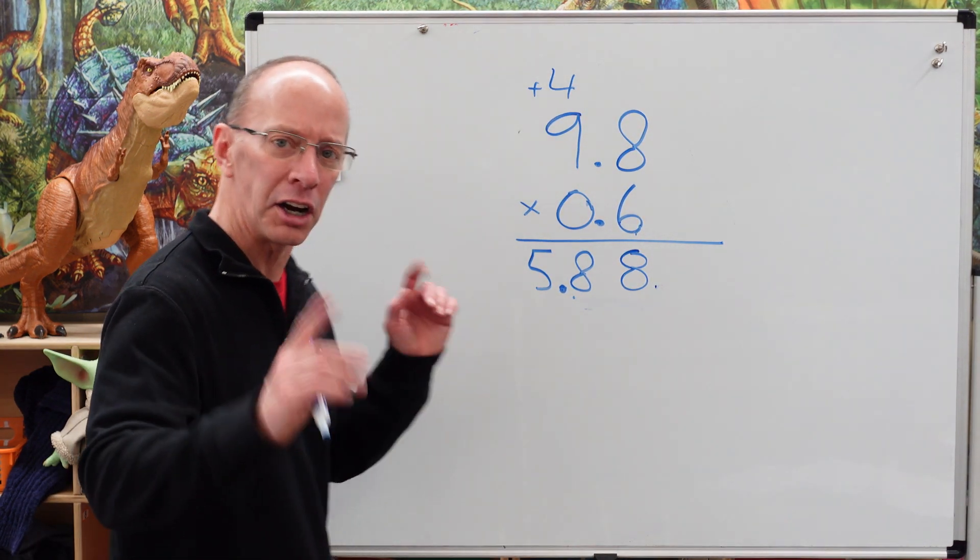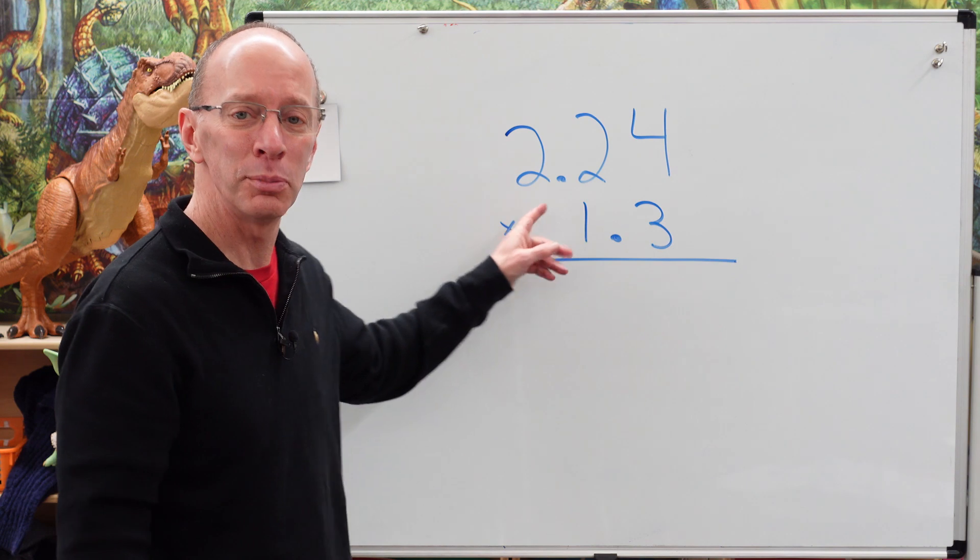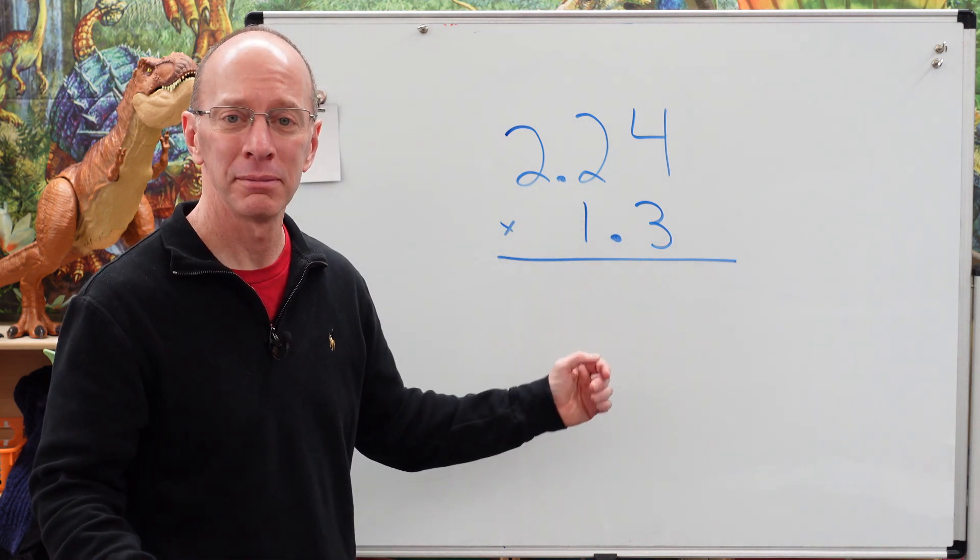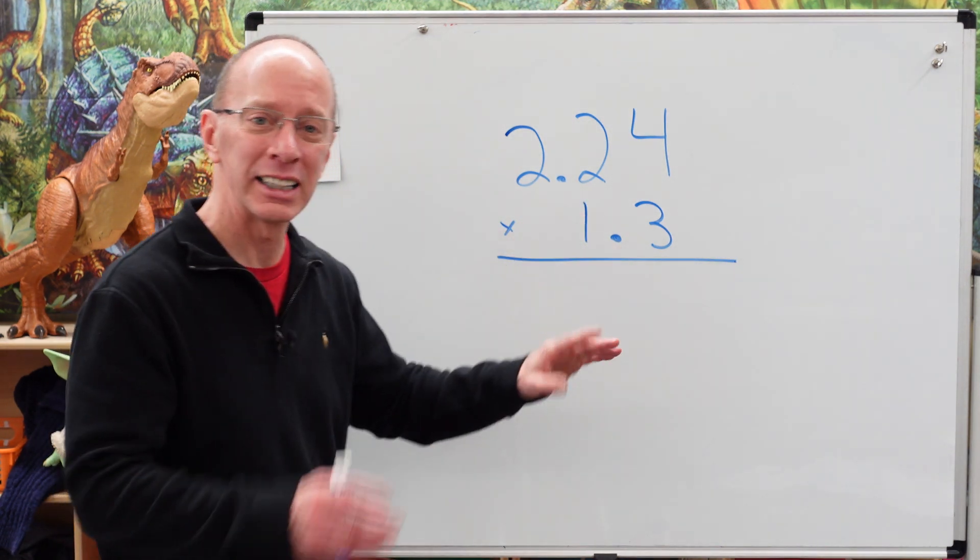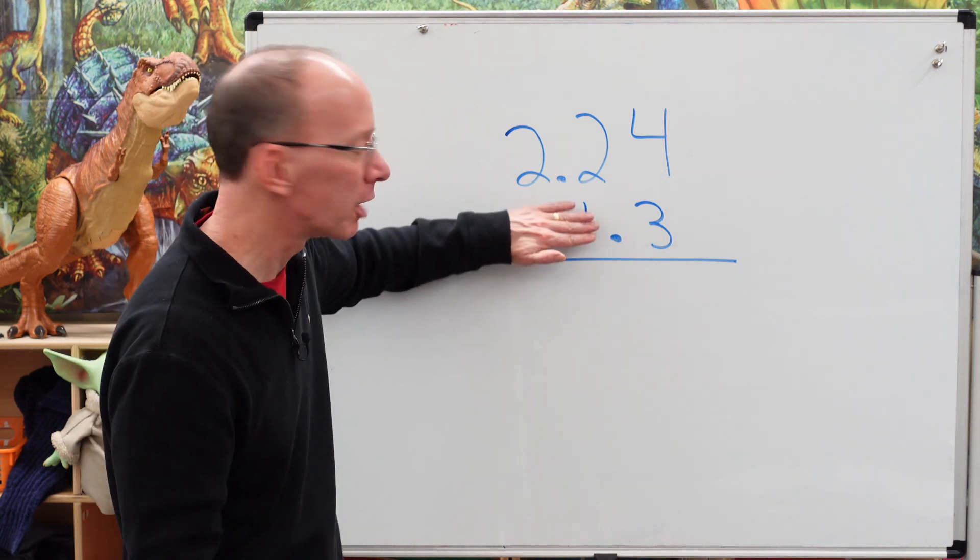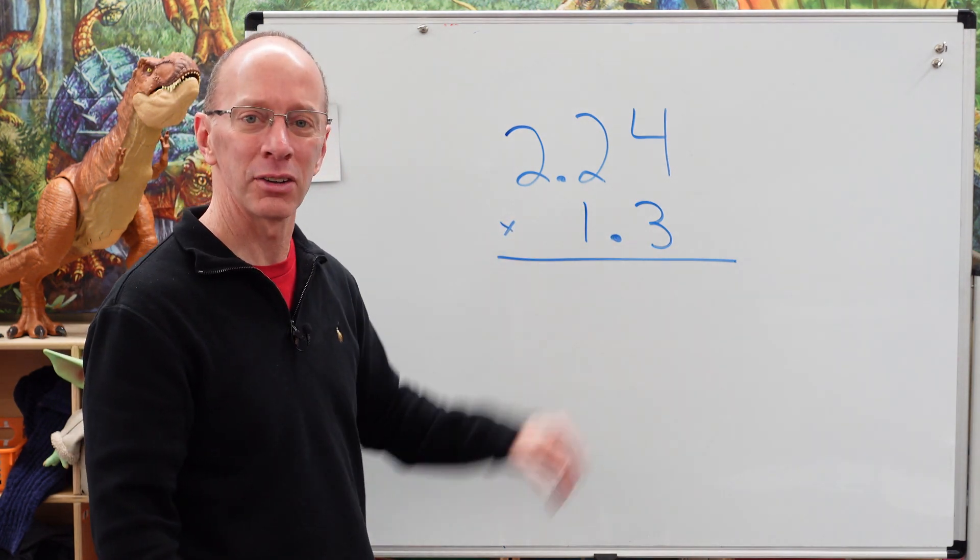Let's do another one. Yeah. All right. Welcome back. All right. We have 2.24 times 1.3. All right. Let's begin. Remember if it gets a little kind of scary, you just cover up a number. But I think we can handle this one.